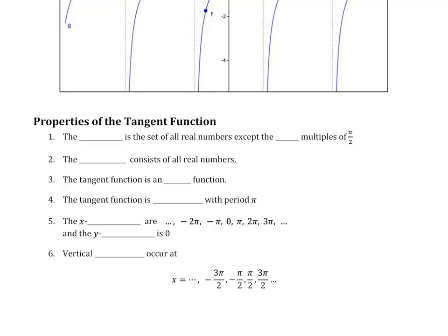Which means we can identify some properties based on this graph that repeats itself. The domain is now not the same as the sine and the cosine function because you have these places here, here, here, where I've got the dotted lines where it's undefined. There are no values for the function there, so you cannot plug in, for example, negative π over 2, positive π over 2, 3π over 2. It is all real numbers except the odd multiples of π over 2.